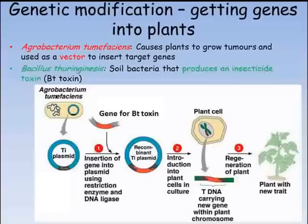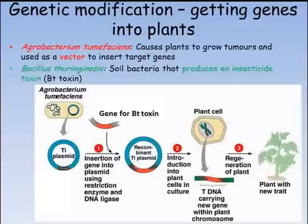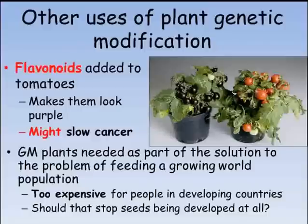The gene for this toxin, known as BT toxin, can be isolated and inserted into the plasmid of a bacteria. In this case we want to use a specific bacteria called Agrobacterium tumefaciens, because this bacteria is able to add genes to a plant's genome. It does this using its plasmid and creates crown galls or tumors in plants. By allowing the genetically modified Agrobacterium to infect leaf discs of the target plant, tumors will form from which whole plants can be grown. These plants will be transgenic and include the gene for BT toxin.